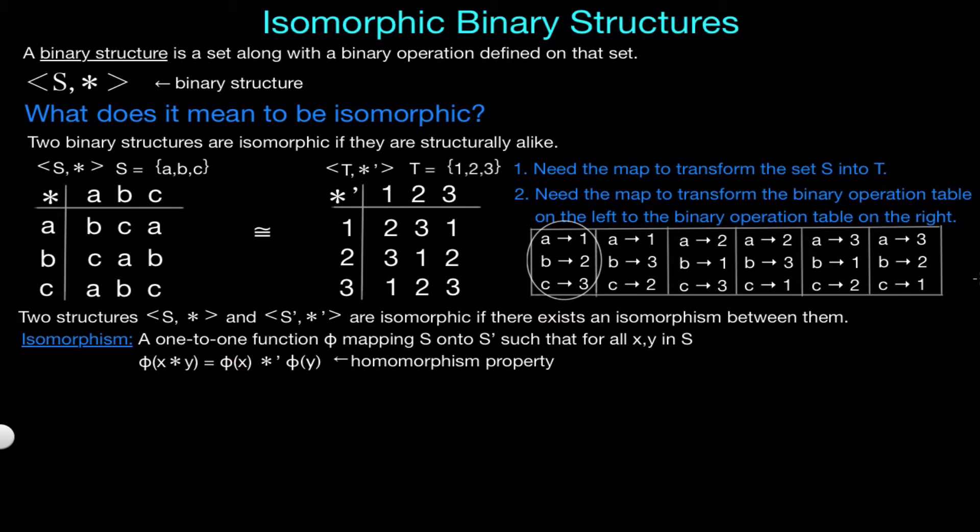And this definition is essentially requiring the same two things as our conditions above. With our first condition, we said we needed to transform the set S into the set T, and this is the same as finding a one-to-one function mapping S onto T. And the second condition said we needed to make the left binary operation table into the right, and that's what the homomorphism property is checking for. So let's go back through our example and find an isomorphism.